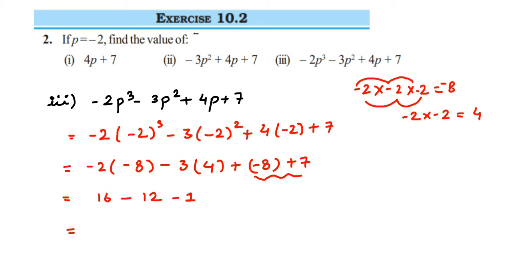So next, solving the last two terms: minus 12 and minus 1 — minus minus is plus, so we add them to 16. 12 plus 1 is 13, but the sign will be negative since 12 is greater, so it will be minus 13. Now last: 16 minus 13 is 3. So the answer for this question is 3.